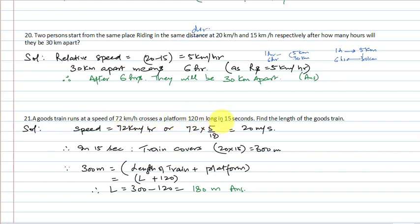A train crosses a platform 120 km long in 15 seconds — find the length of the goods train. When a train crosses a platform, it covers its own length plus the length of the platform.